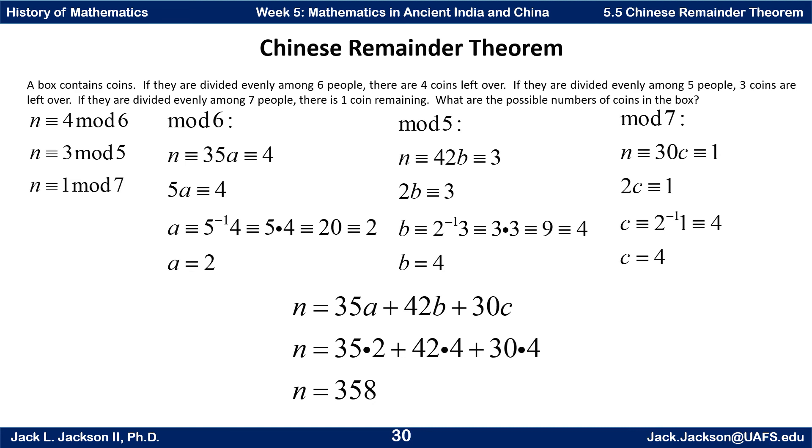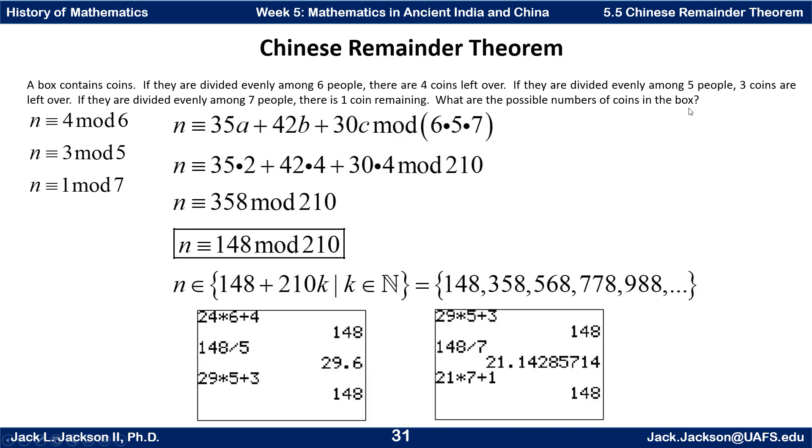As long as that is true, there's going to be a solution, or in this case a set of solutions. If they said what are the least number of coins, then our answer would be 148. If they gave us that it was between two numbers, we might be able to narrow down which one of these would fit a certain range. So there's a brief introduction to the Chinese remainder theorem, a type of problem that was found in the ancient Chinese writings, including some in the nine chapters.